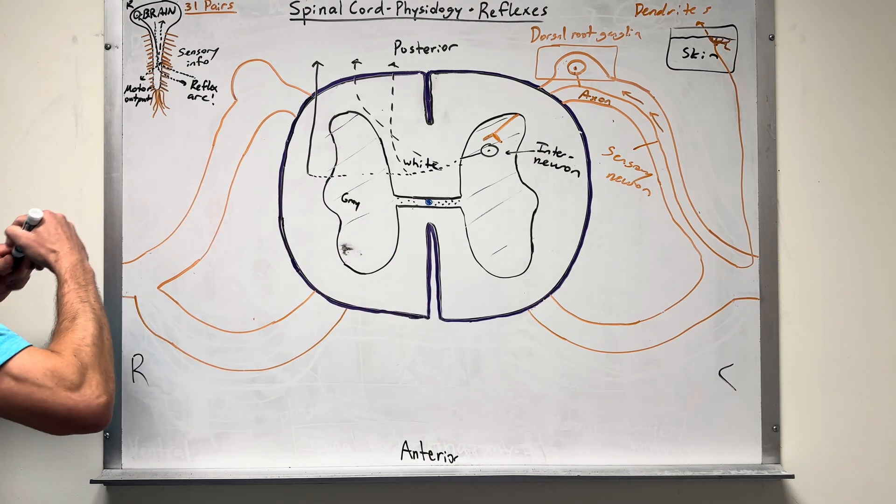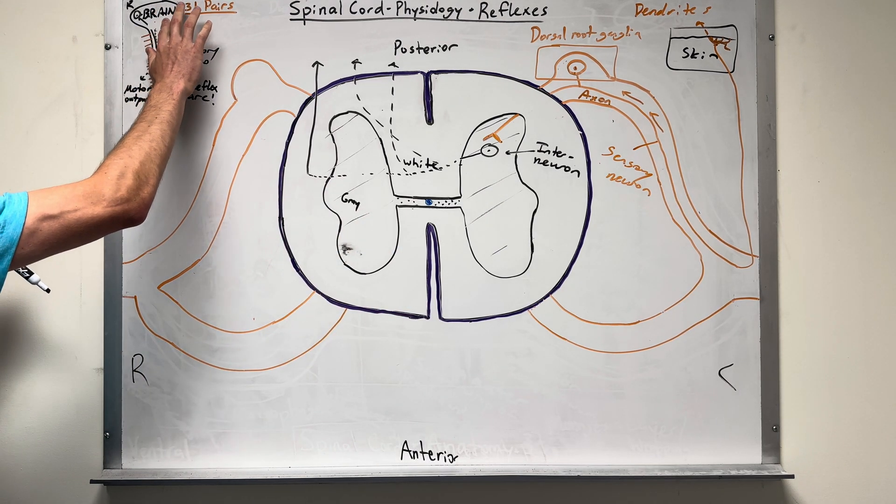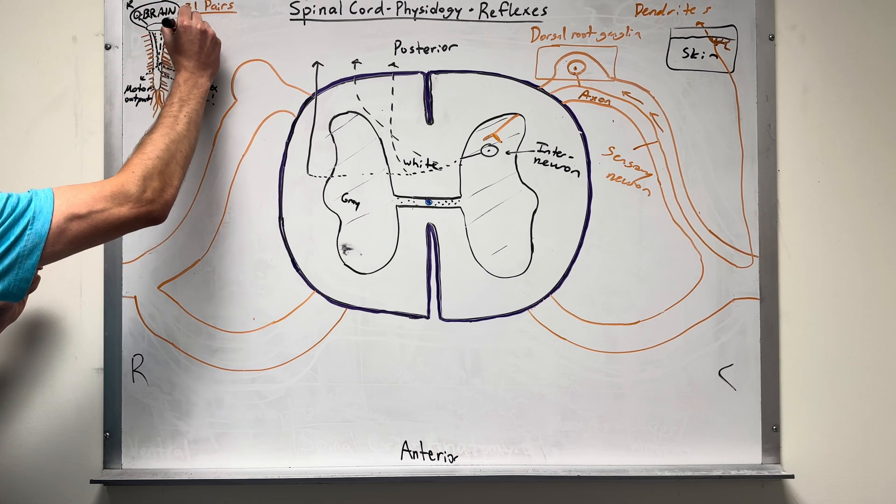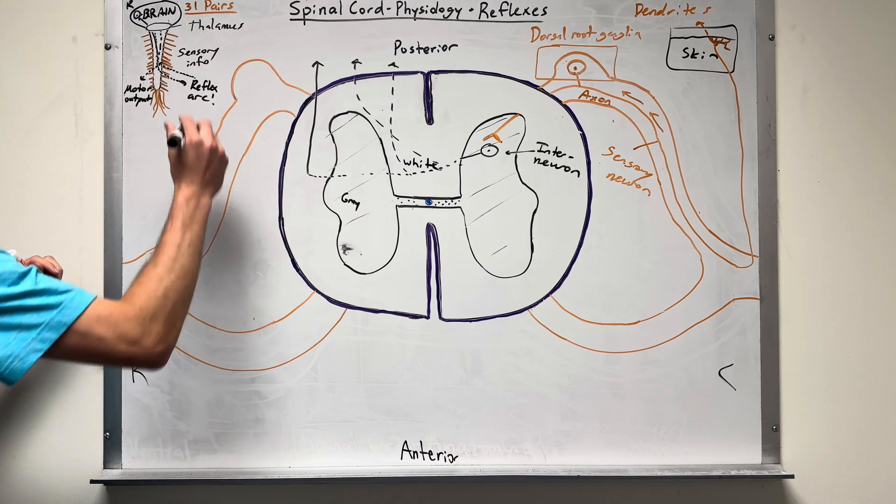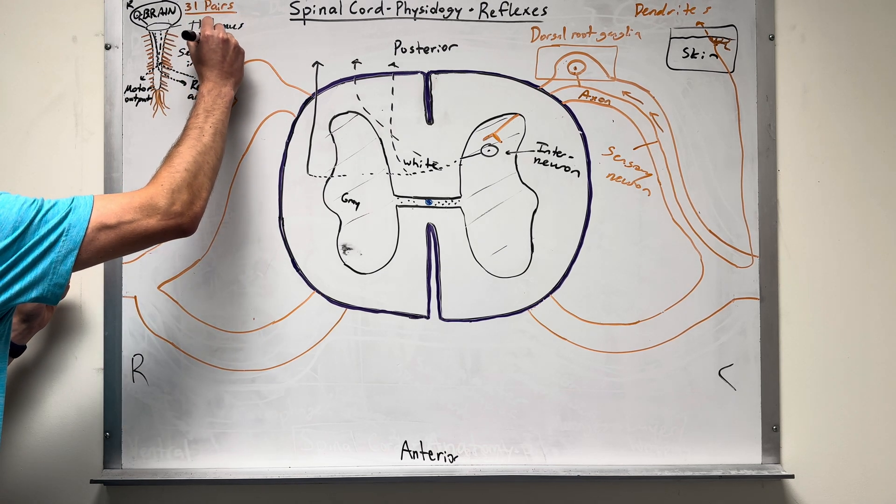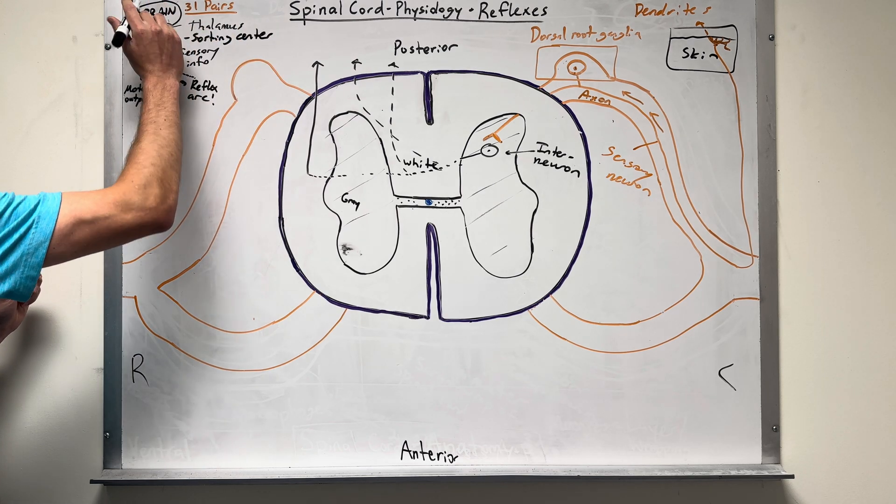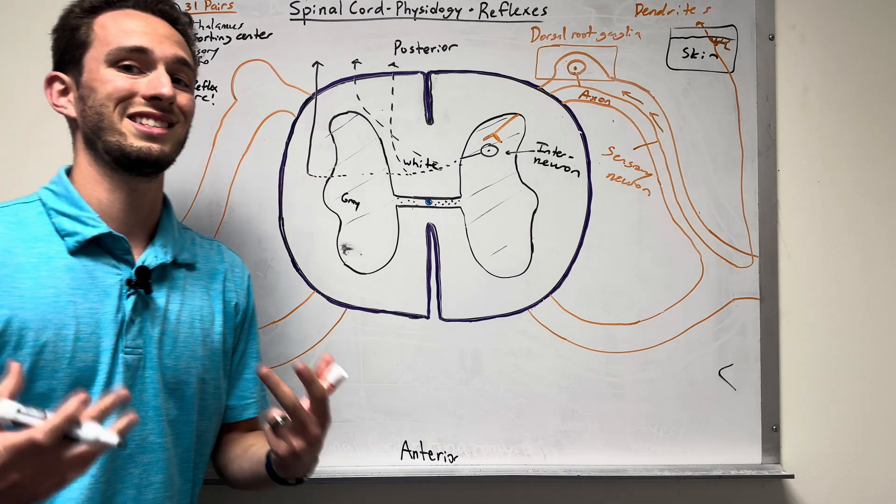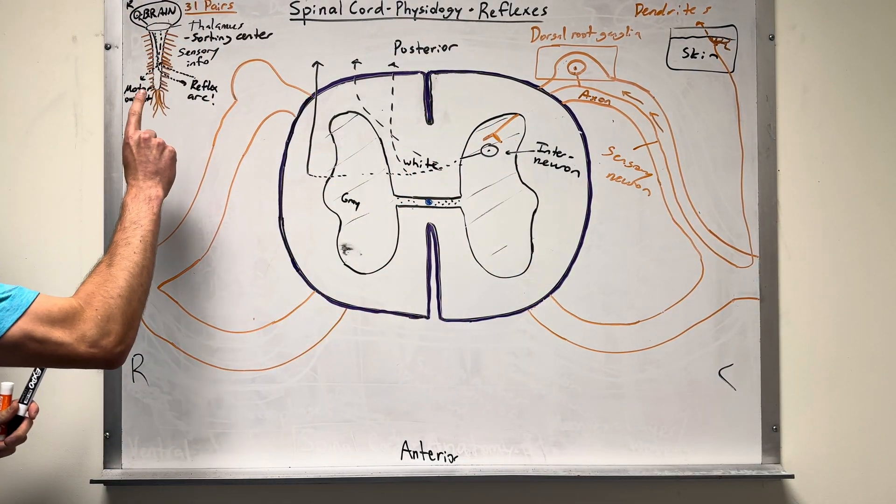Now, I want to give a couple more clarifications here. When we send that information up to this region of the brain, it's actually going to stop first in this region called the thalamus. The thalamus is going to be the sorting center of all sensory information. And then it will be sent up to something called the somatosensory cortex. But that's where we're actually going to process that sensation from our skin.